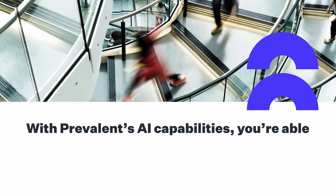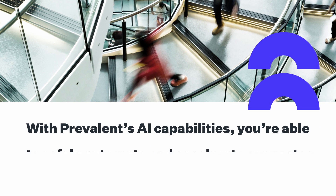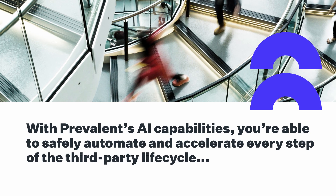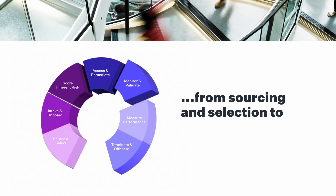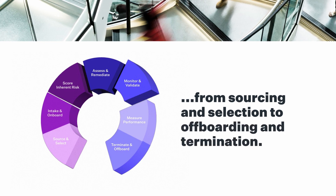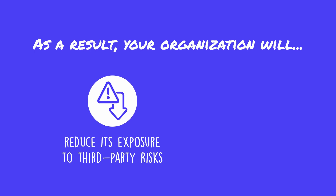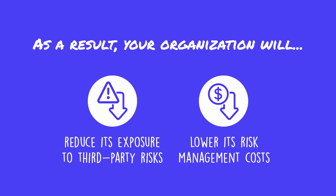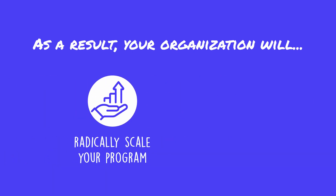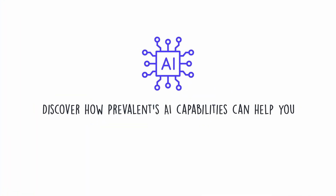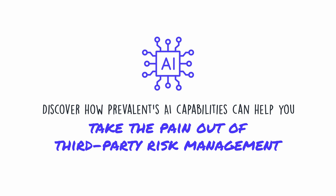With Prevalent's AI capabilities, you're able to safely automate and accelerate every step of the third-party lifecycle, from sourcing and selection to off-boarding and termination. As a result, your organization will reduce its exposure to third-party risks, lower its risk management costs, radically scale your program, and enable faster decision-making. Discover how Prevalent's AI capabilities can help you take the pain out of third-party risk management. Request a demo today.